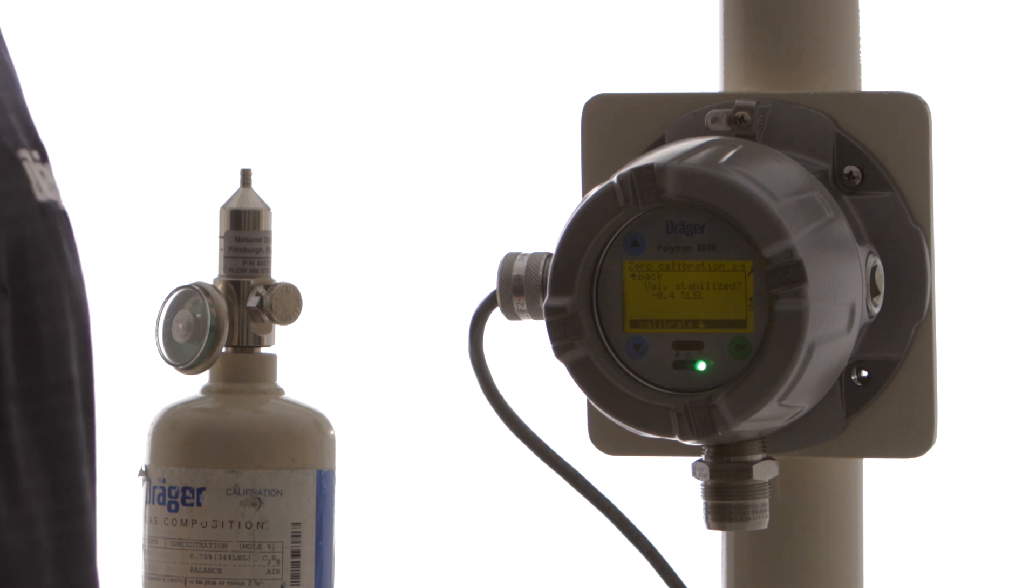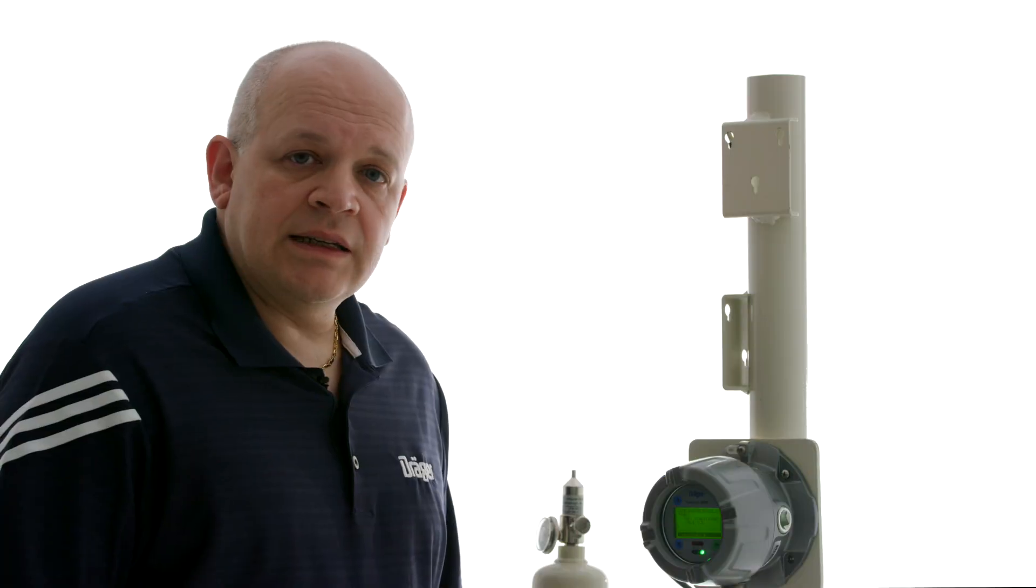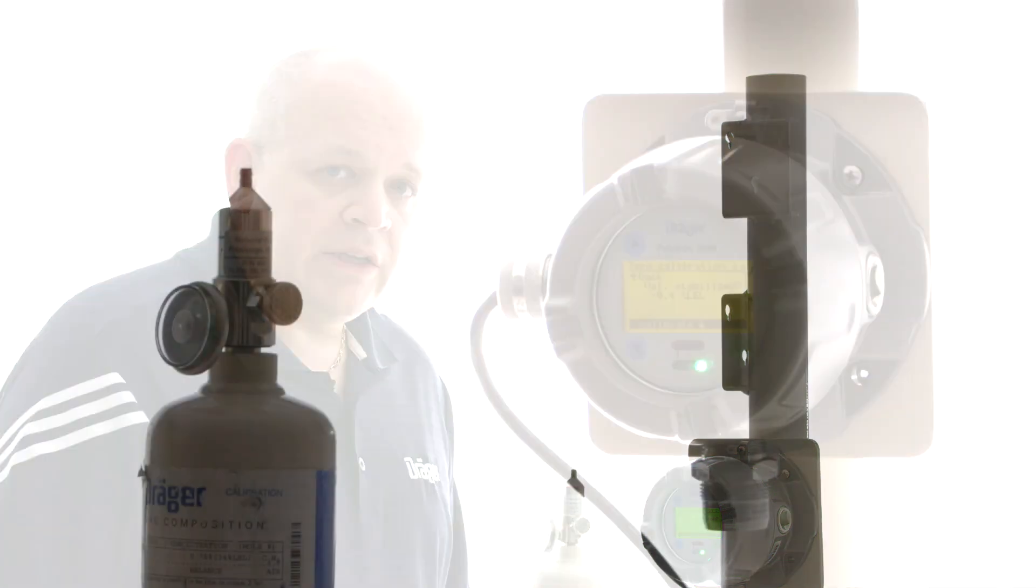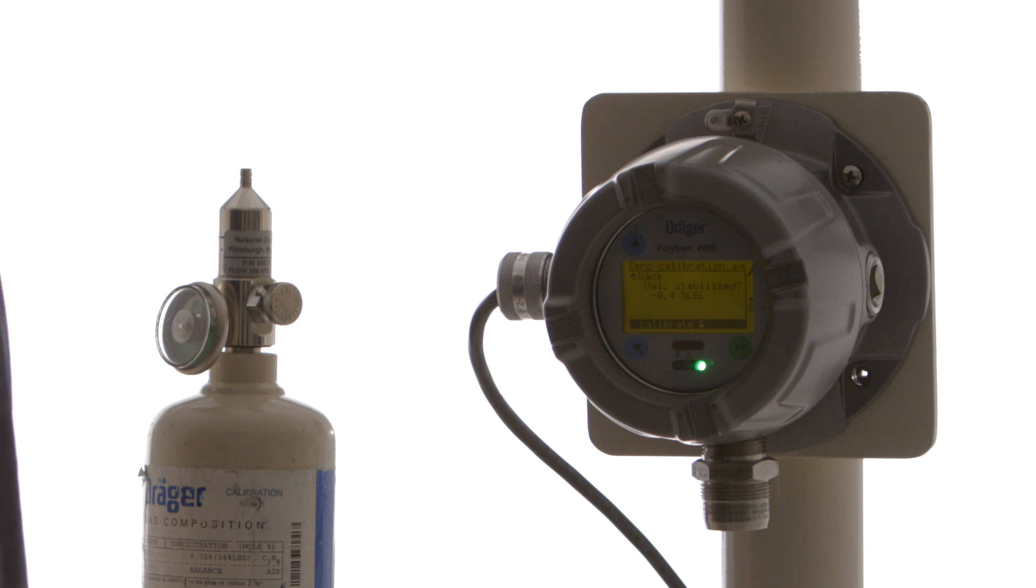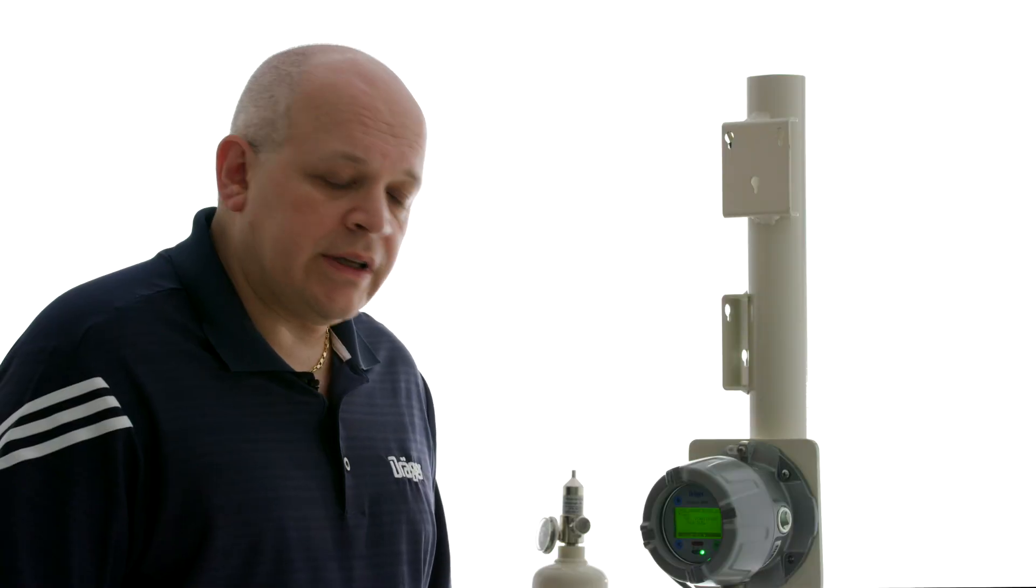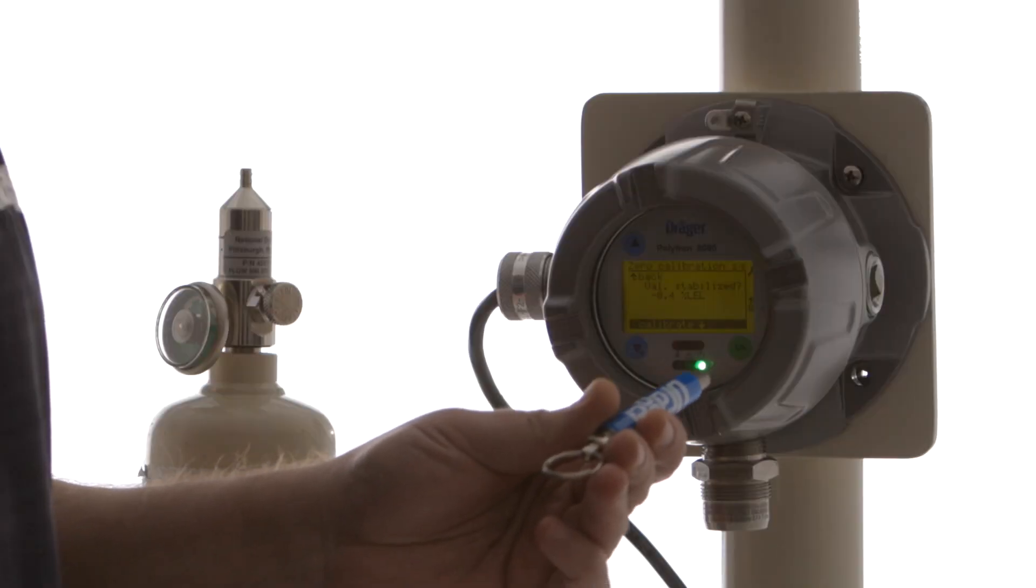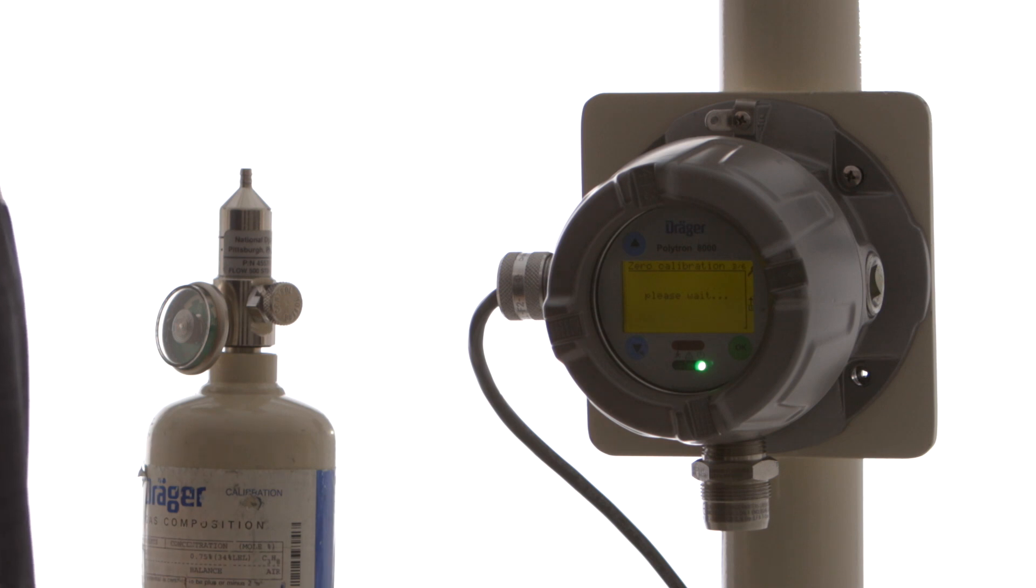And we're going to wait for the zero value to stabilize. It does not necessarily need to read zero. It just needs to be stable. Our value is stabilized at negative 0.4% LEL. So we're going to accept that as our new zero. We're going to select calibrate.